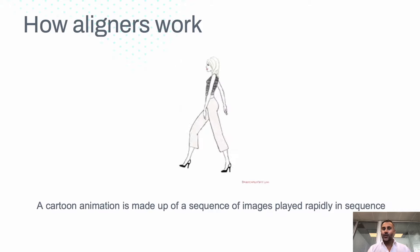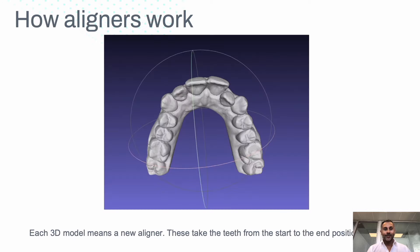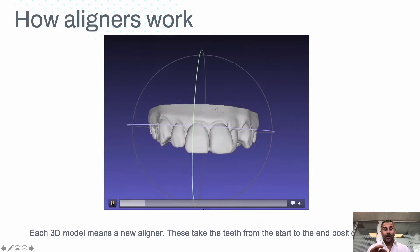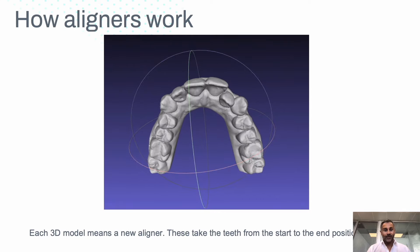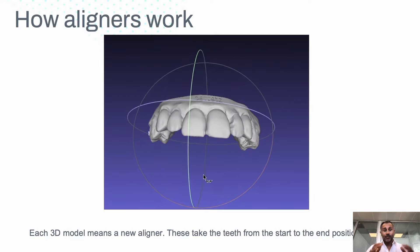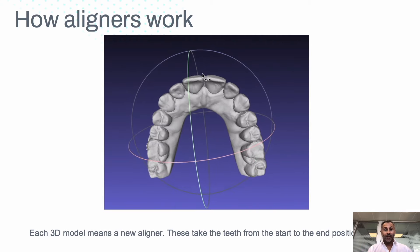Let's understand how aligners work. In a cartoon, the animation is made up of a sequence of still pictures played rapidly in sequence. Aligners share a lot in common with this. Each aligner is made from a 3D model. This is an example of a start position of a 3D model. Looking at the end position, we can start to see there's a difference in position — this is superimposed — and the teeth are literally expanded and moved into position over a sequence of 3D models, a bit like the animation frame.